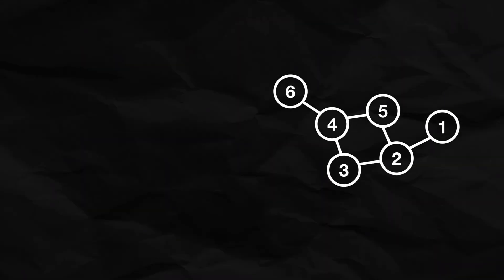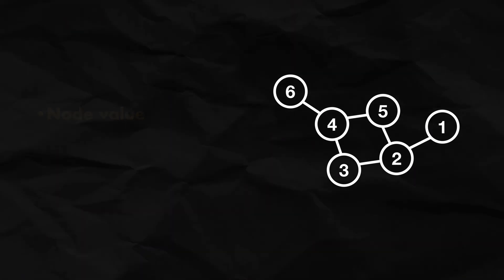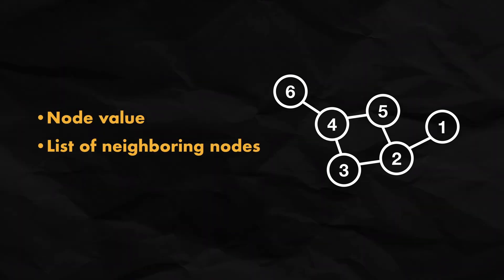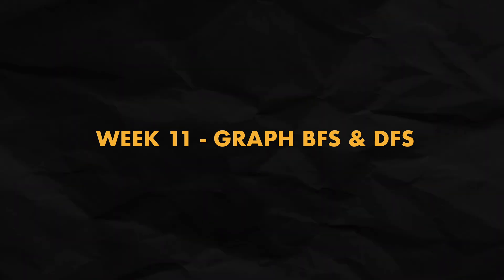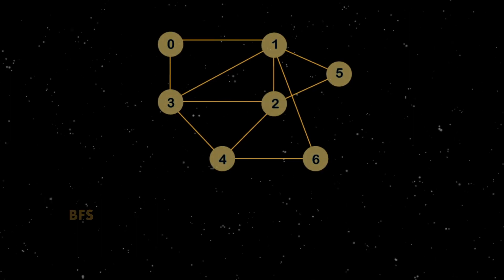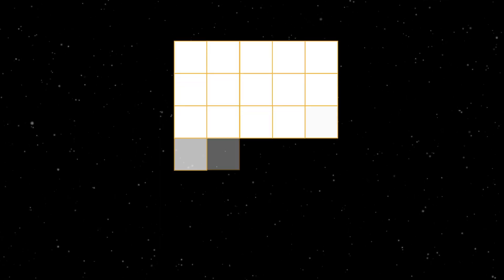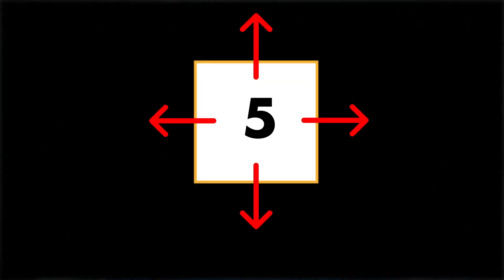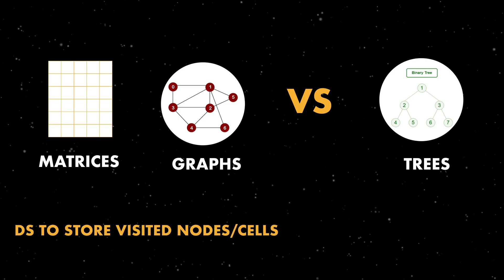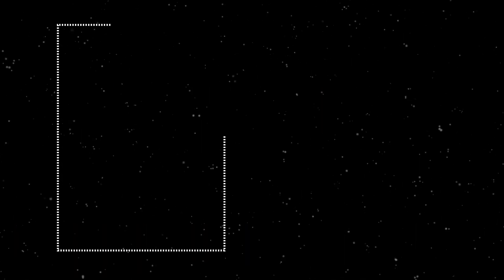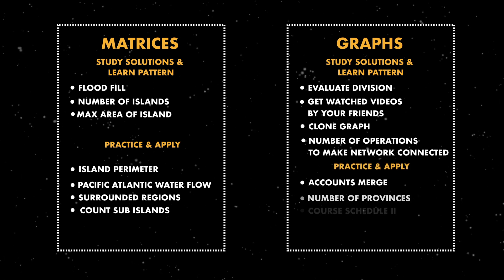The topic for the last two weeks is graphs and matrices. In LeetCode, graphs are usually represented with nodes like a tree, but instead of left and right children, each node has a list of neighbor nodes. In week 11, we cover the basics of traversing graphs with BFS and DFS — pretty much the same as with trees. For BFS we use a queue; for DFS we recurse on neighbor nodes. With matrices we do the same but on adjacent cells. One key difference from trees: you'll usually need to maintain a data structure tracking visited nodes or cells to avoid traversing them again.